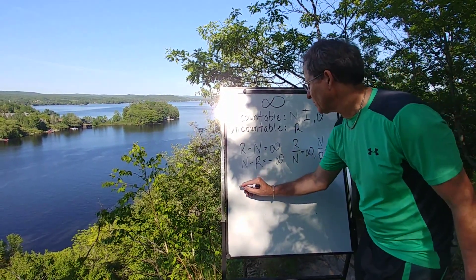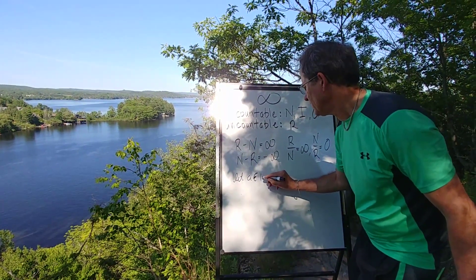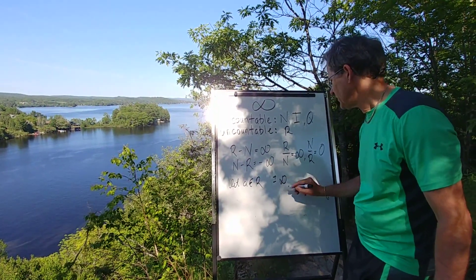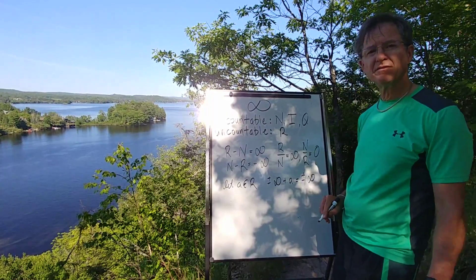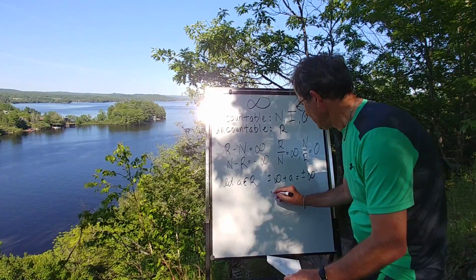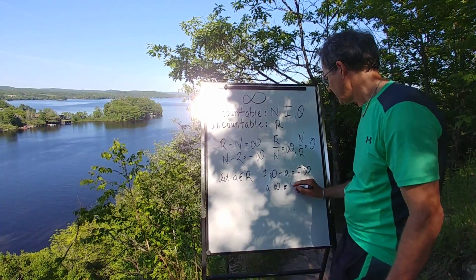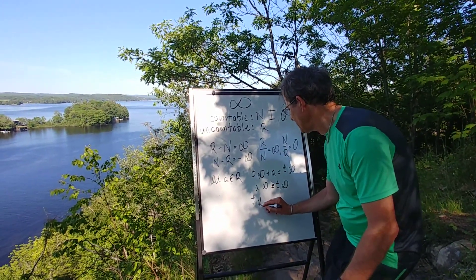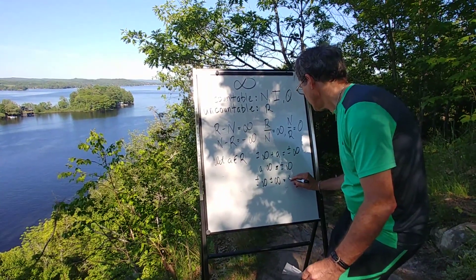Let's say that a is an element of the real numbers. Then I can do some calculations. If I do plus or minus infinity plus a, I still get plus or minus infinity. If I do a times infinity, I get plus or minus infinity depending on the sign of a. If I do plus or minus infinity plus or minus another infinity, I still get plus or minus infinity, where the plus signs all go together.